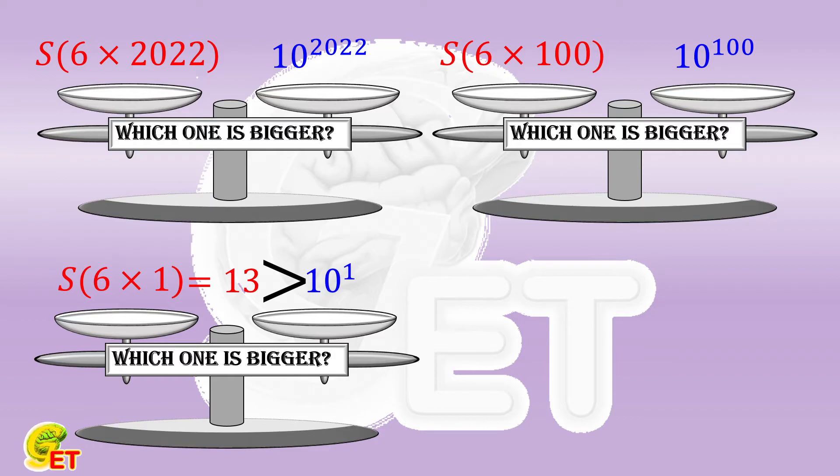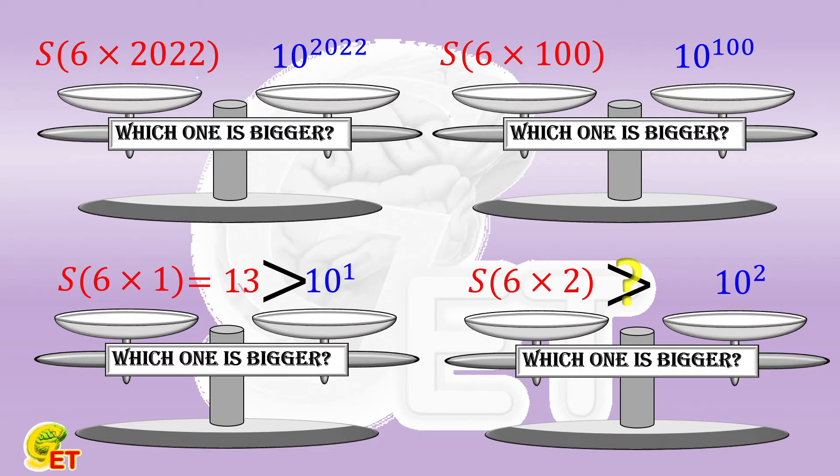So if we can prove that when n is equal to 12, S of 12 is bigger than 100, we may find the idea of how to find the final answer. S of 12 isn't a small number either, but if we can prove that S of 12 is not smaller than S of 6 times S of 6, it would be enough to prove that S of 12 is bigger than 100.